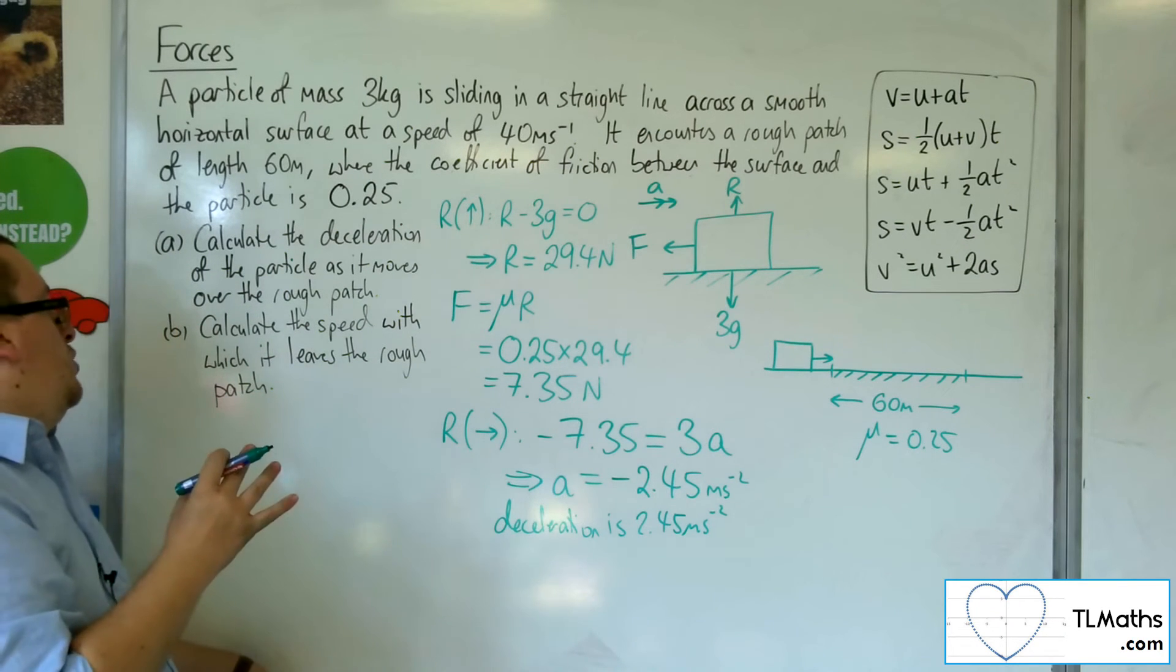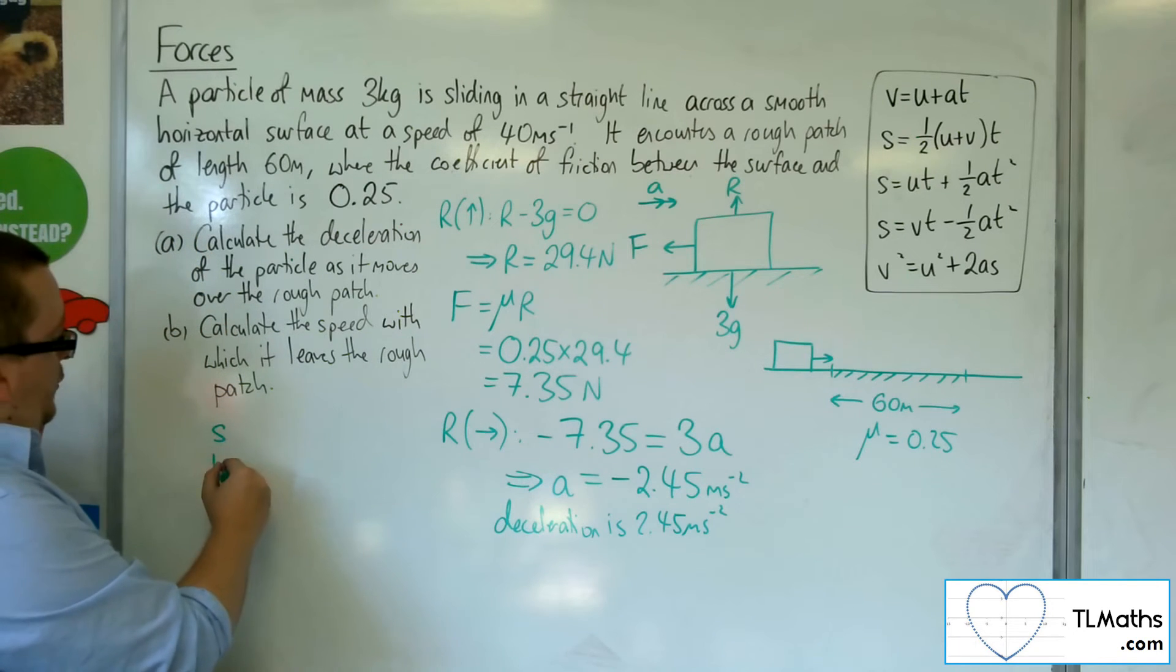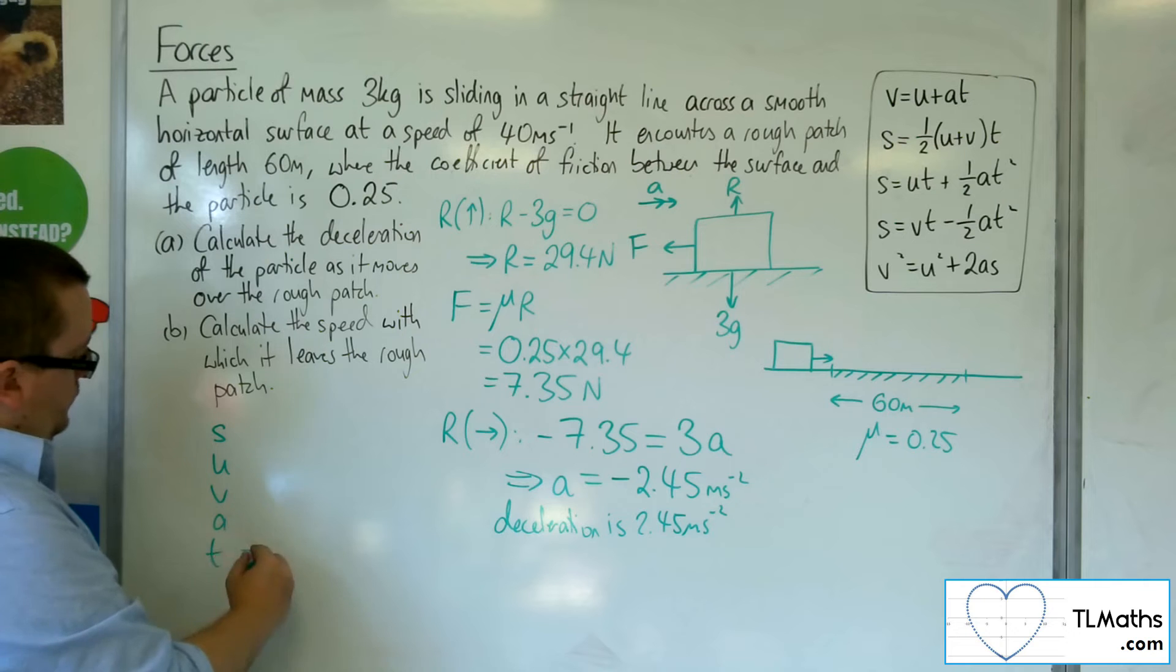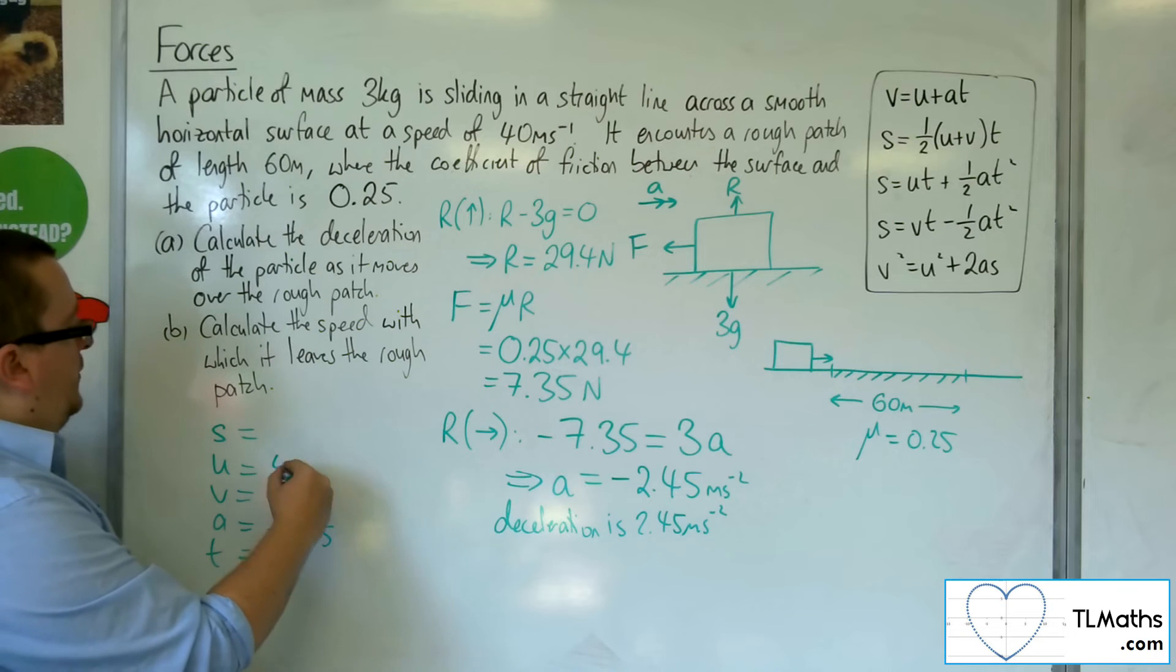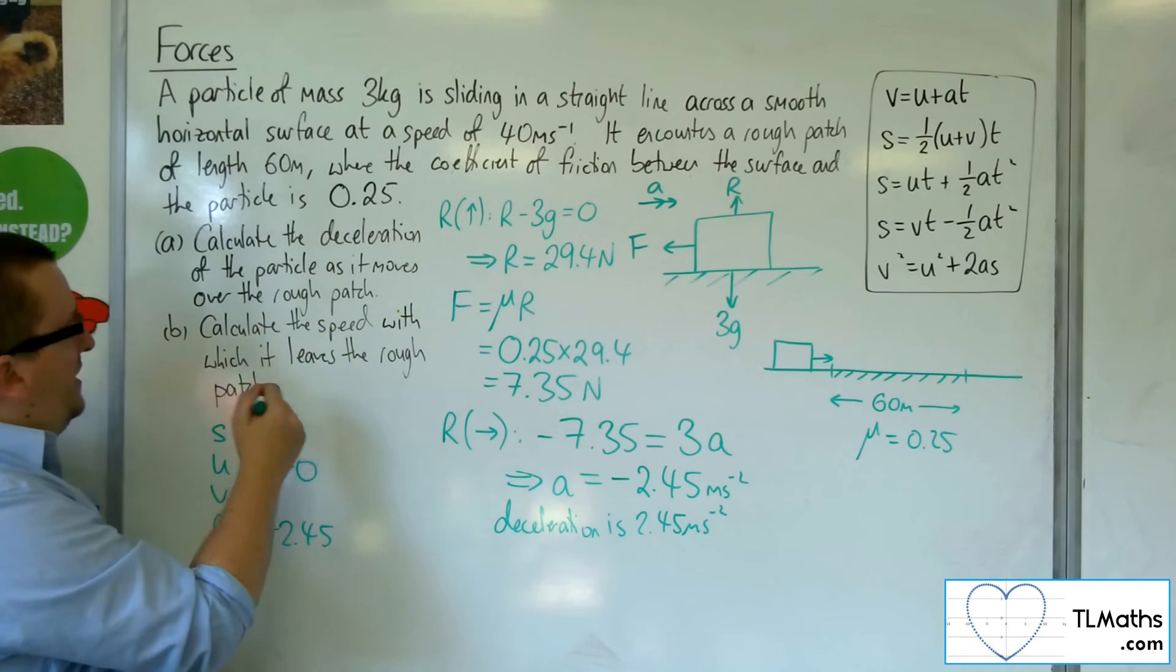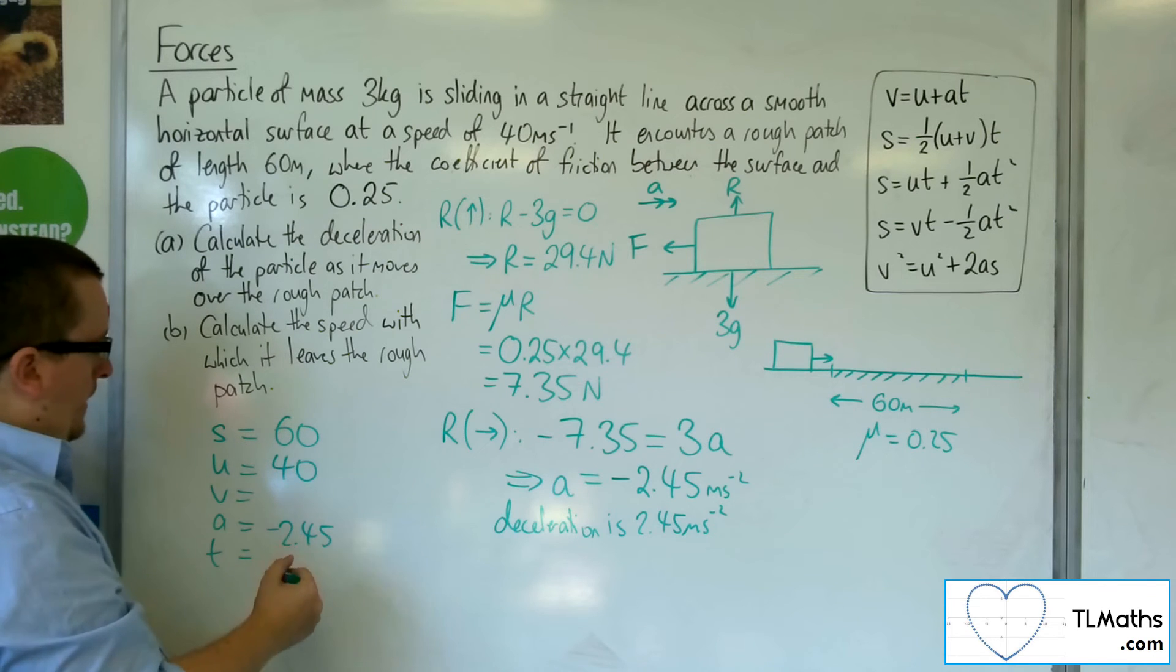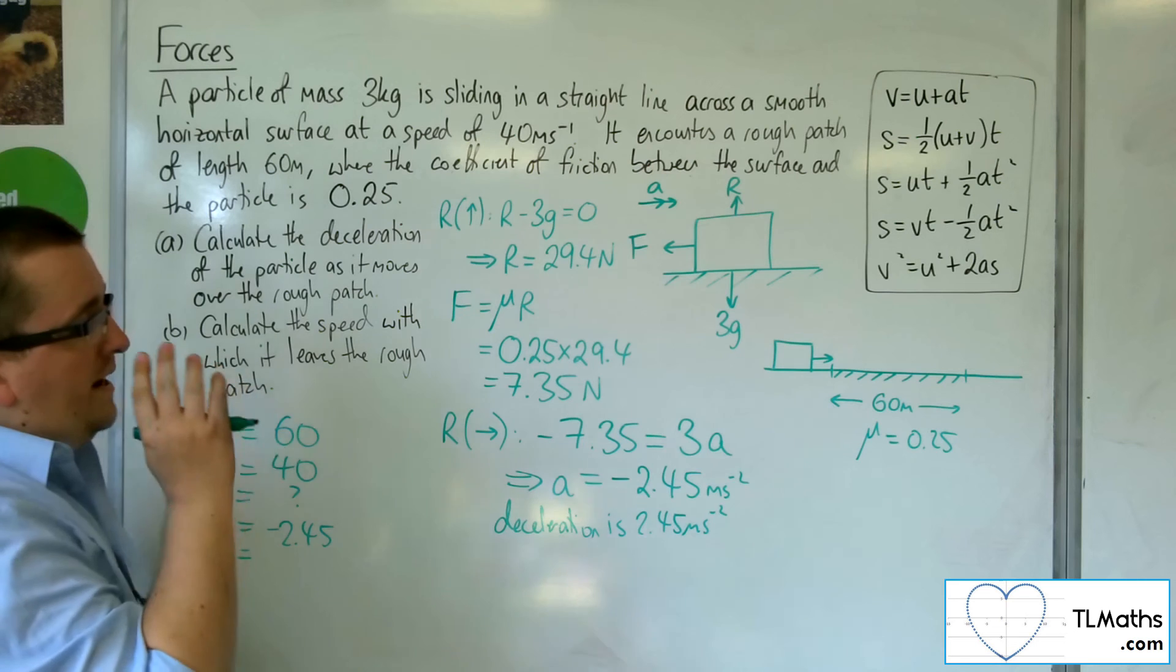Calculate the speed with which it leaves the rough patch. Well, in order to do that, we're going to have to bring in SUVAT. Because we want to be decelerating at 2.45 metres per second per second. We know that the initial velocity is 40 metres per second, and we need to cover 60 metres. So I want to know that final velocity.